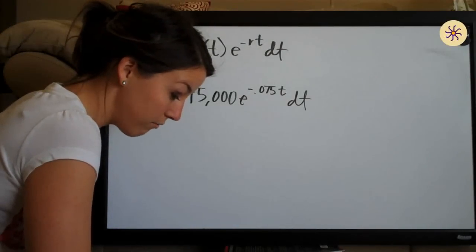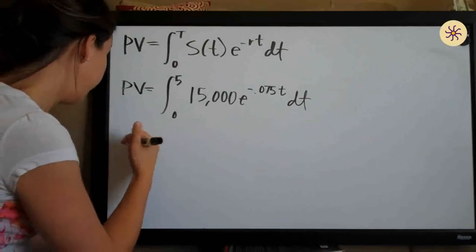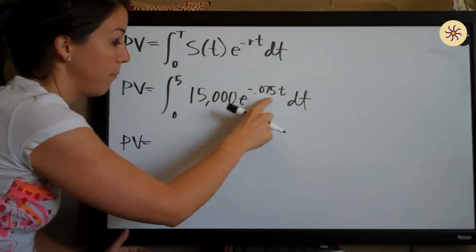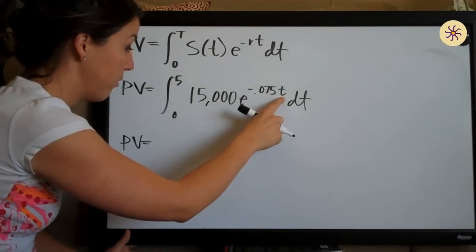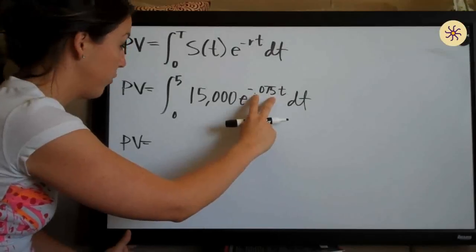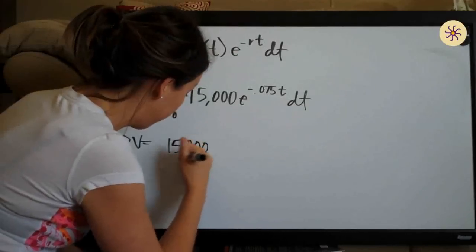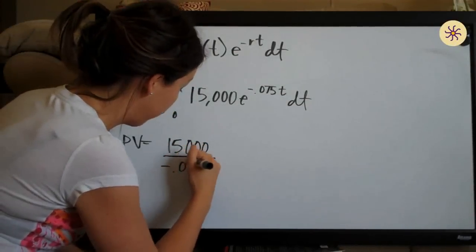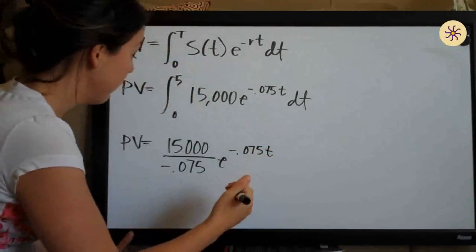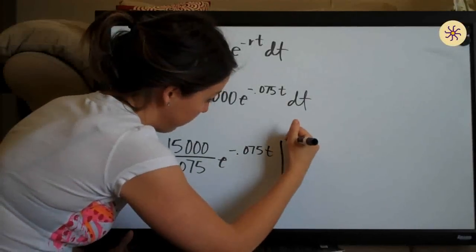We've plugged in all of the information given to us in the problem and now we need to take the integral and solve. When we have e to some coefficient multiplied by our variable, we simply divide this coefficient by the coefficient in the exponent and leave the rest as is. So our integral is going to look like 15,000 over negative 0.075, times e to the negative 0.075t, evaluated on the range zero to five.